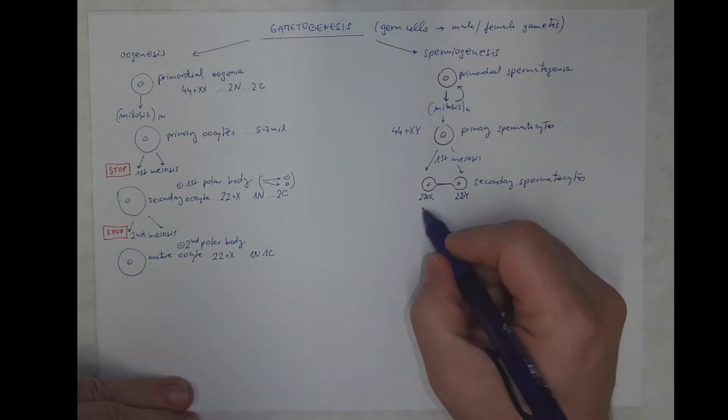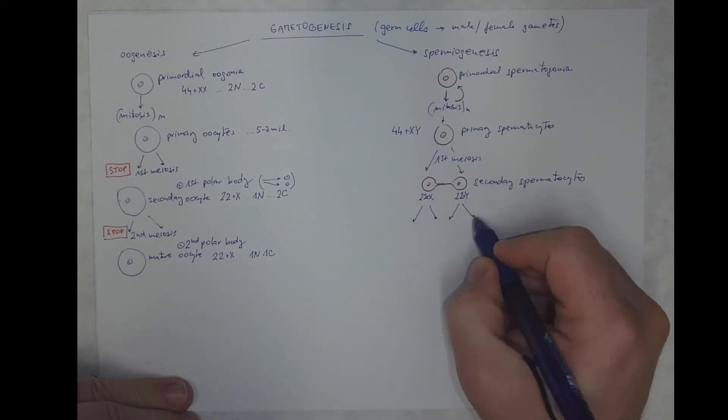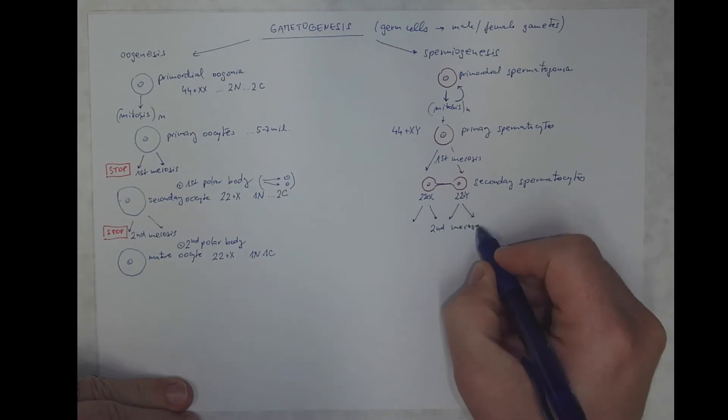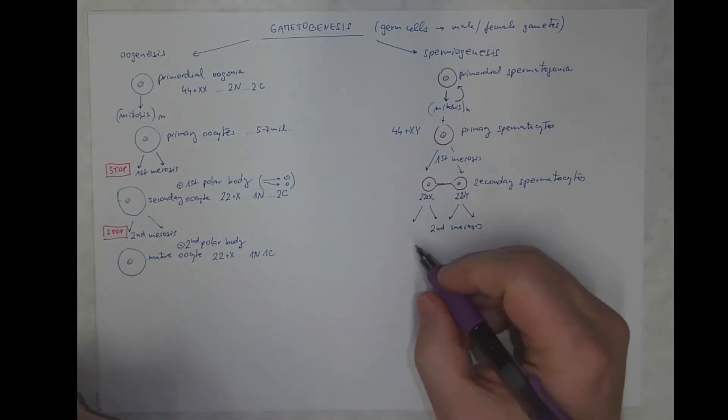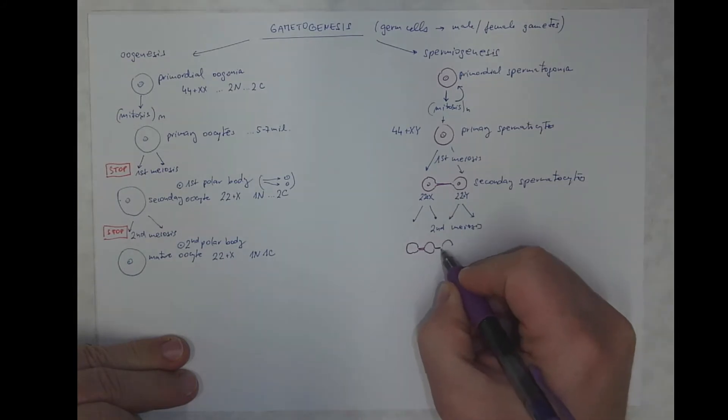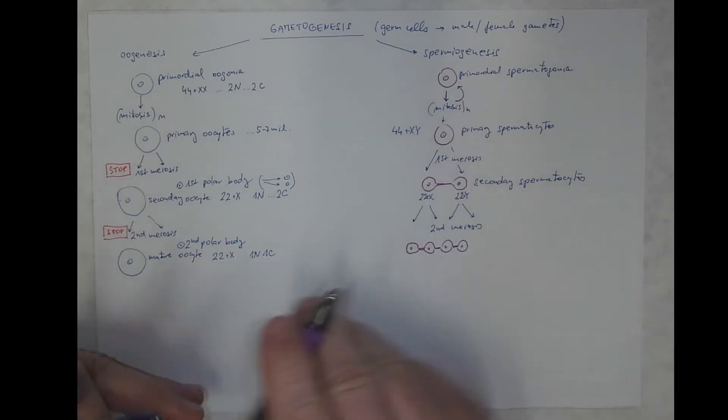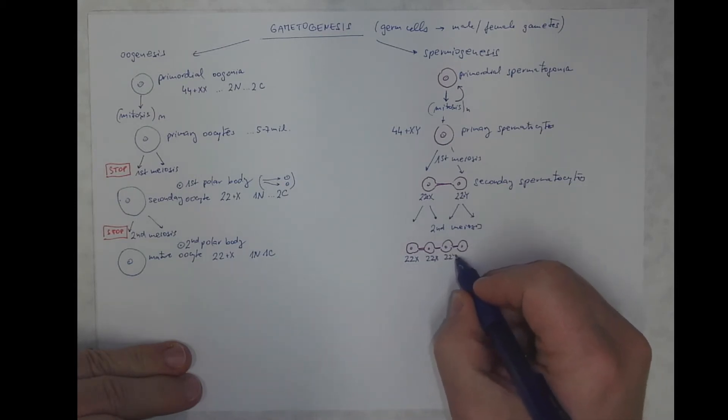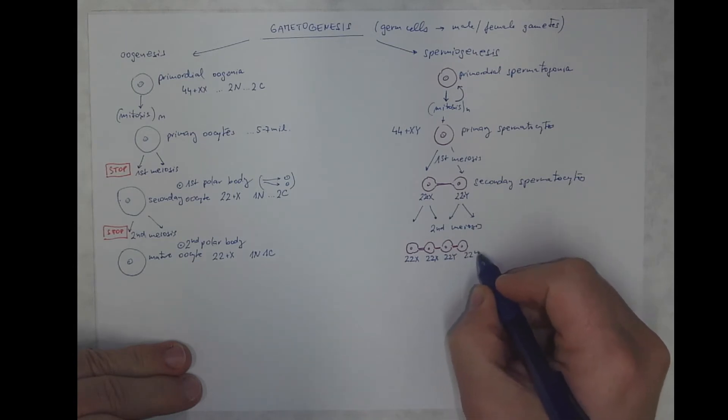They are entering the second meiotic division, each of these cells, the outcome of which are four cells called spermatids. At the beginning, they are still connected via cytoplasmic links into kind of a chain of cells. Two of these have the X chromosome, and two have the Y chromosome.